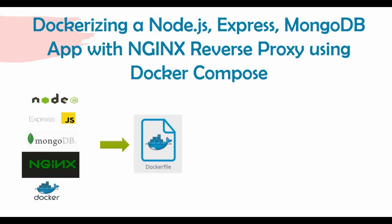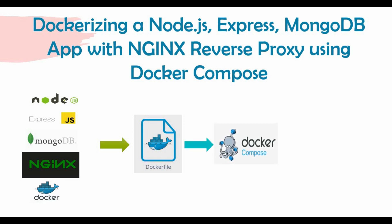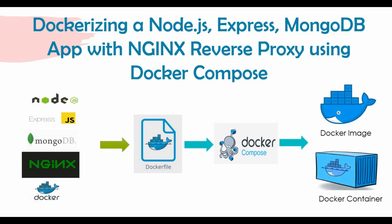We will have Dockerfiles for the Node.js app and for NGINX where we need to make some configuration changes. For MongoDB, we don't need a Dockerfile because we will use the standard image from Docker Hub. Using those Dockerfiles we will write the Docker Compose file, and once we run docker-compose up, the Docker images will be created first, then the Docker containers for Node.js, MongoDB, and NGINX will be running.